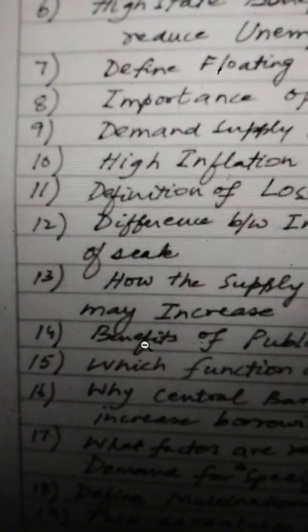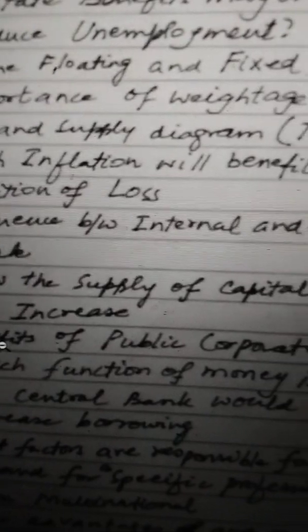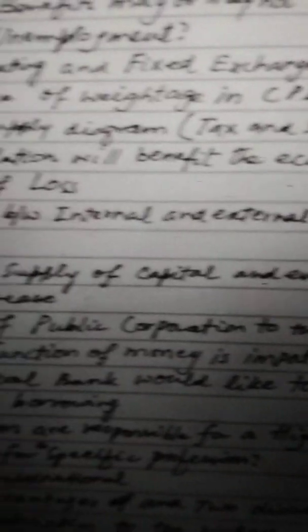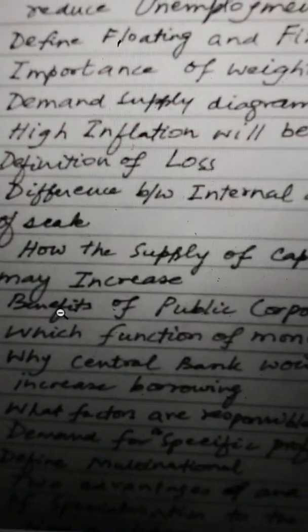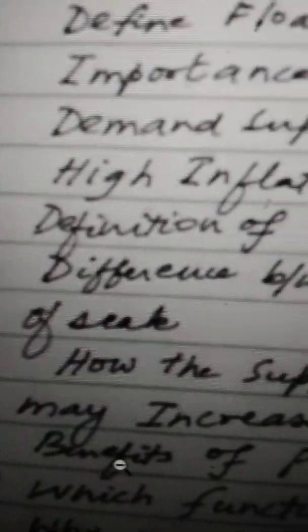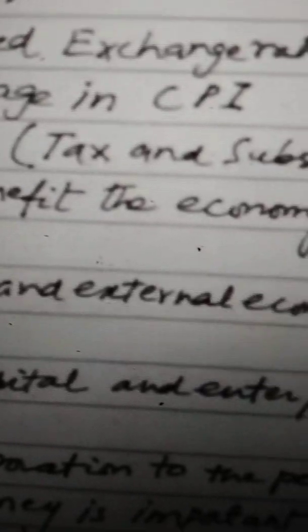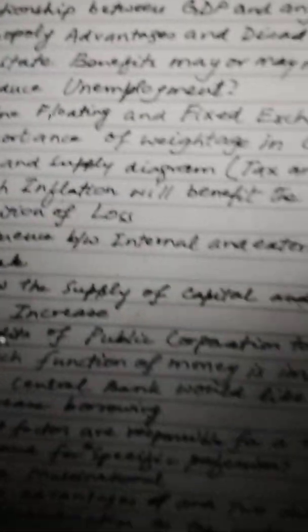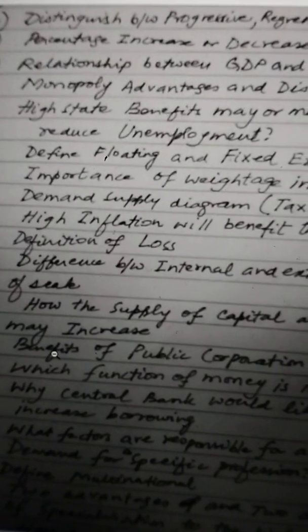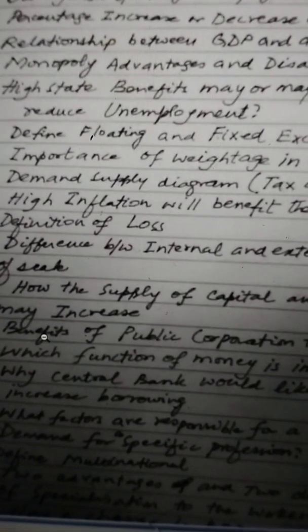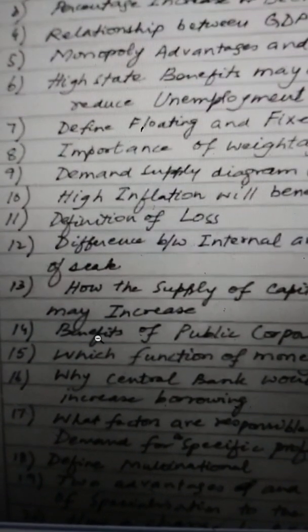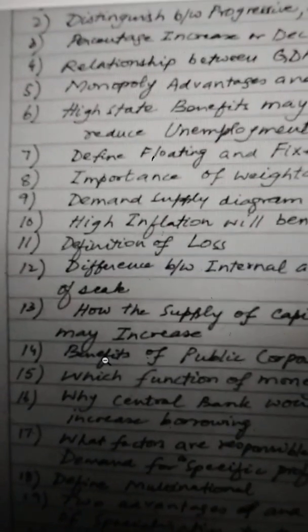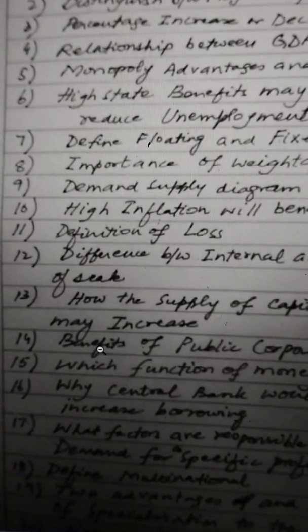Question number 12: the difference between internal and external economies of scale. Internal economies of scale is the growth of the firm because of its own resources, and the average cost of production will be reduced with a large output produced. Whenever there is a question on internal economies of scale, write down the types: financial economies, risk-bearing economies, technical economies, and so on.